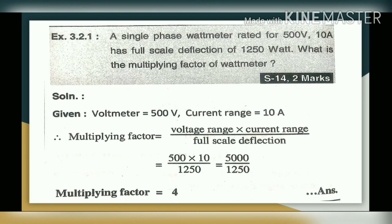Numerical 1 — Multiplying factor: A single wattmeter rated for 500 V, 10 A has a full scale deflection of 150 W. What is the multiplying factor? Voltage range = 500 V, current range = 10 A, full scale deflection = 150 W. Multiplying factor = (500 × 10) / 150 = 5000 / 150 ≈ 4. Answer: multiplying factor is 4.